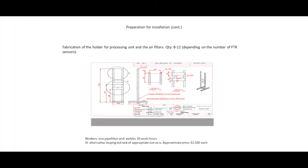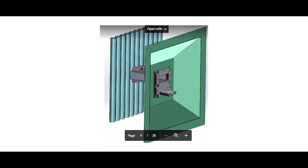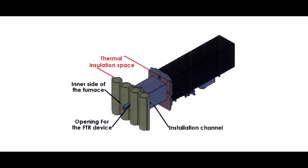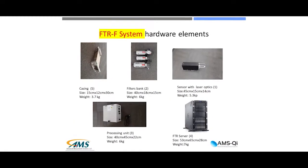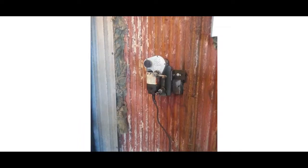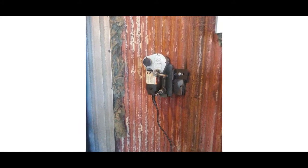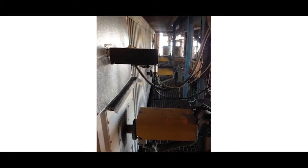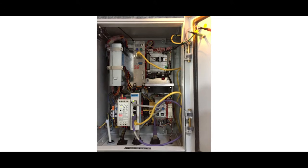Preparing a boiler for a typical eight-sensor FTR system with a two-person crew will require around three working days. This can be carried out during regularly scheduled maintenance outages. The rest of the installation takes about 100 man hours but can be performed without interrupting normal boiler operation. If needed, adding more crews would expedite the installation.